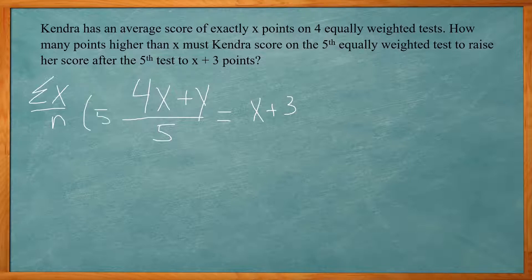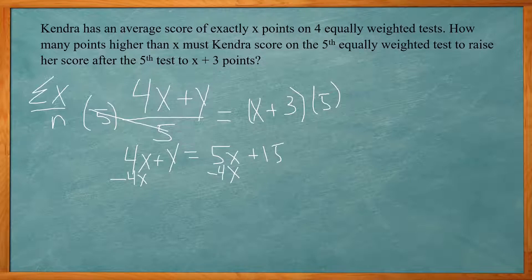That gives me 4x plus y. And I'm going to distribute the 5. So 5 times x is 5x and 5 times 3 is 15. So now we have 4x plus y equals 5x plus 15. I want to get the x's to the same side. So I'm going to subtract 4x from both sides. So y is equal to x plus 15. So y was the fifth test. So we need to score basically 15 more points than our average, which was x. So our answer is we need to score 15 points higher than x.